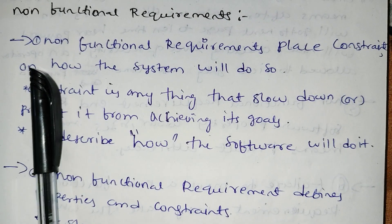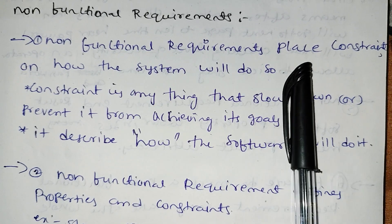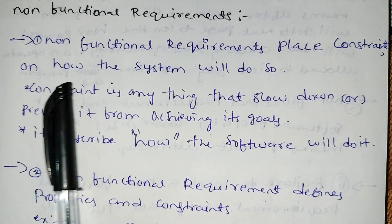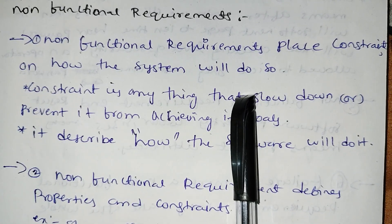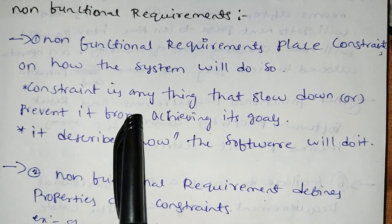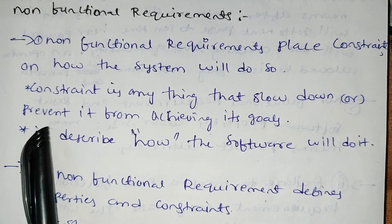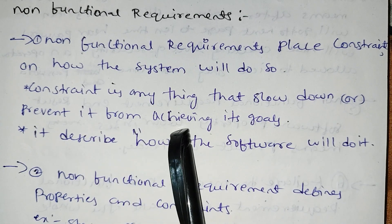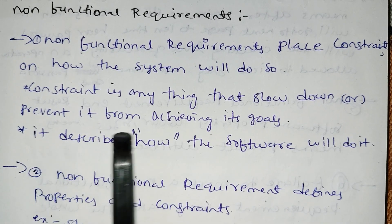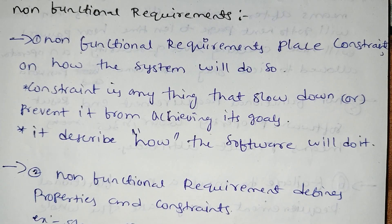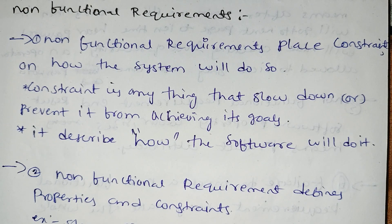Non-functional requirements place constraints on how the system will do something. Constraints means things that slow down or prevent the system from achieving its goals. So non-functional requirements describe how the system should do what it does.